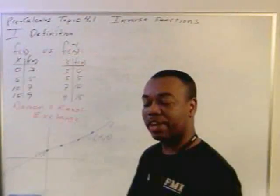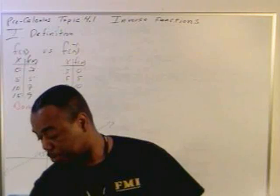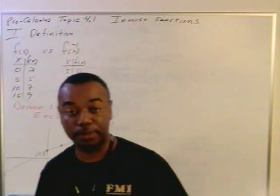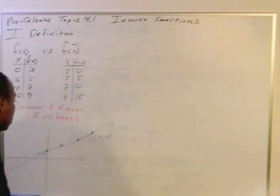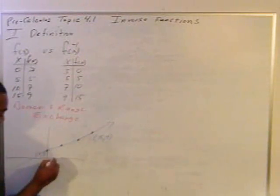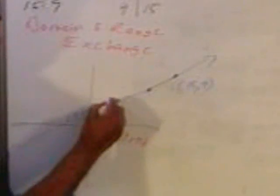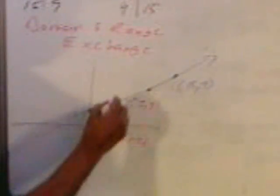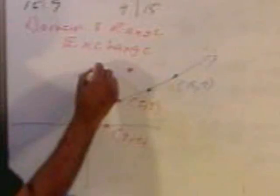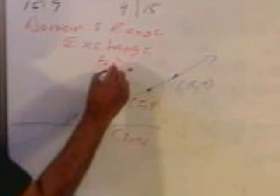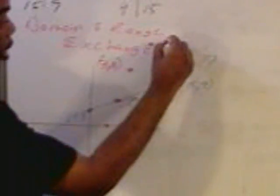Now, if we want to trace the inverse function, this is what we see. Instead of a 0, 3, we would have a 3, 0. We would still have our 5, 5. But here we would have the 7, 10. And finally here, we would have our 9, 15. And this is the appearance of the inverse function.